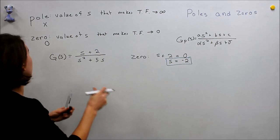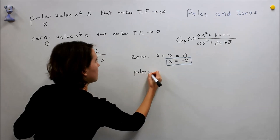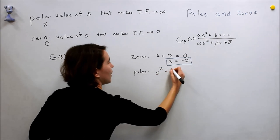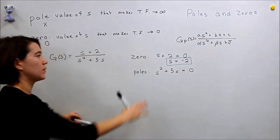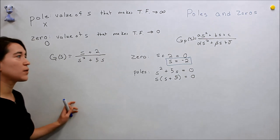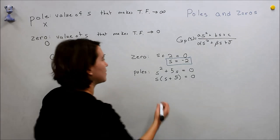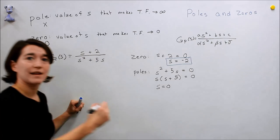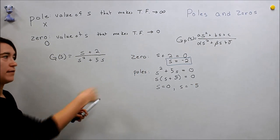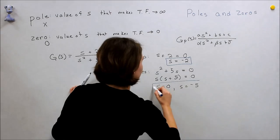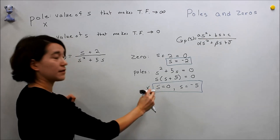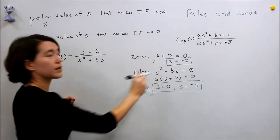And then what about our poles? So we take this expression, and we want to make it zero. So s² + 5s = 0. We see we can take an s out of here. So we have s(s + 5) = 0. So here we actually have two poles. So if s = 0, then that is one of the poles. Or if s = -5, we have that expression is also equal to zero. So our poles here would be zero and negative five, and our zero would be negative two.